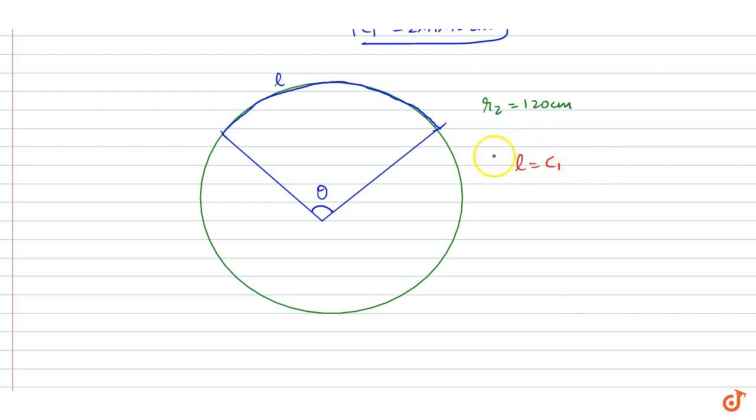that is c₁ equal to the circumference of the wire.